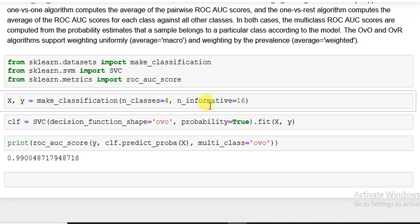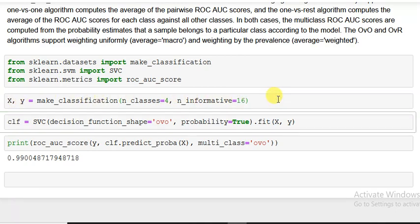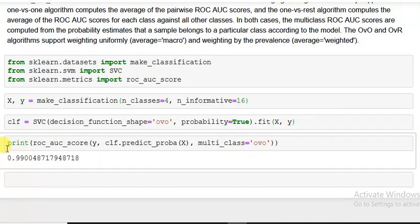Now I make X and y to make input and output. Now use the function SVC with decision_function_shape='ovo' (one-versus-one), probability=True, dot fit with input and output. I give it a name clf.